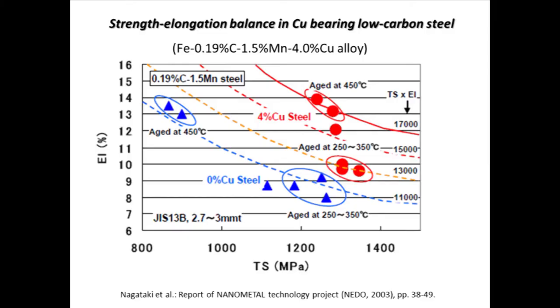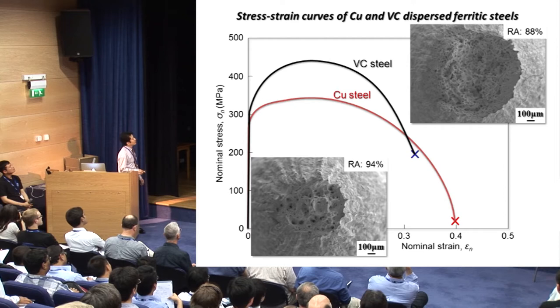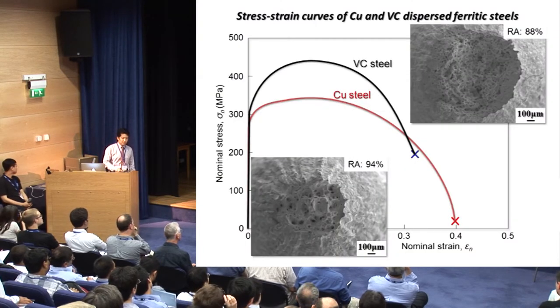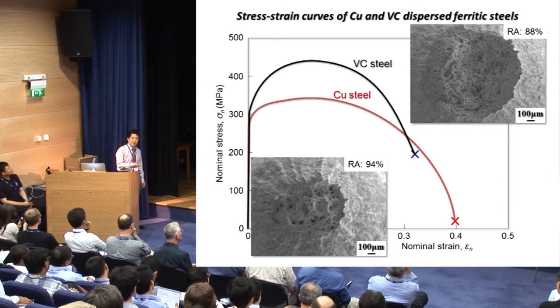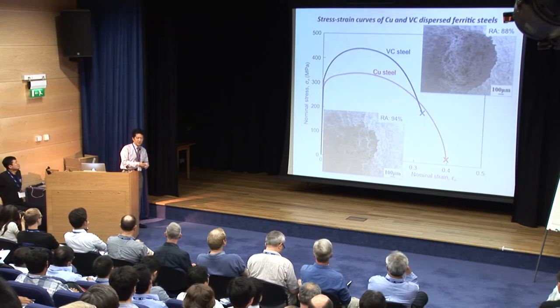There is some experimental evidence for my idea. This is the strength-elongation balance in copper-bearing low-carbon steel, reported in a Japanese national project called the Nanometal Technology Project. The mechanical properties of copper-bearing martensitic steel, shown by the red circles, have a better strength-elongation balance compared with copper-free low-carbon martensitic steel. In addition, the strength-strain curve of copper dispersion ferritic steel is characterized by large local elongation and reduction of area compared with hard carbide dispersion steel. From these results, I thought that precipitation of copper is effective not only for strengthening, but also for maintaining ductility, especially local elongation.